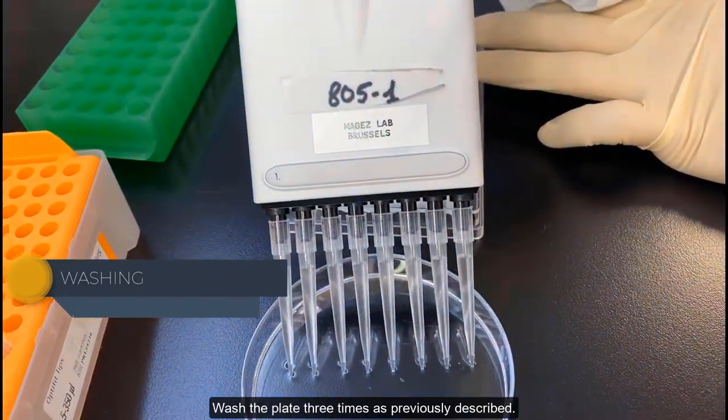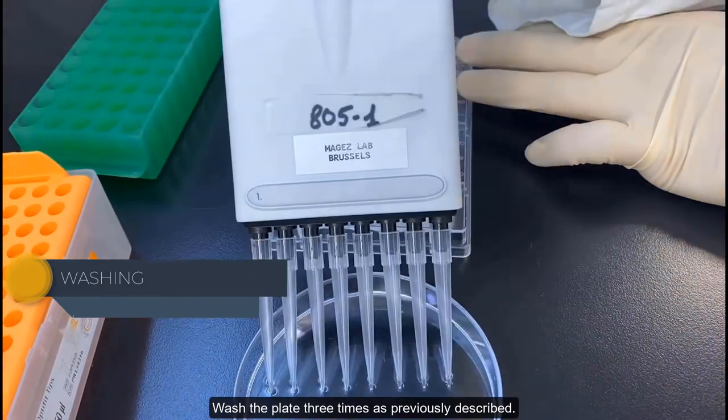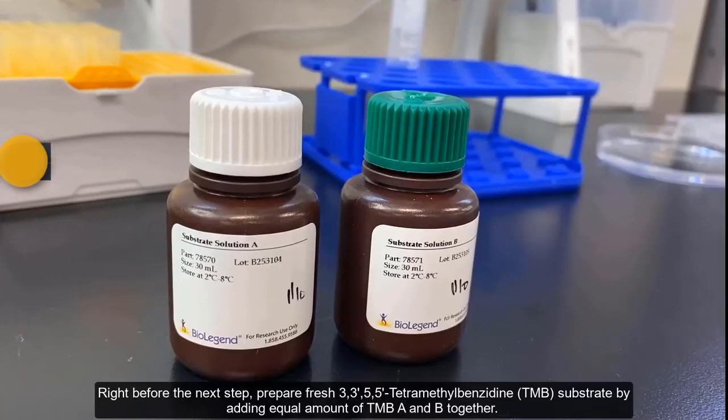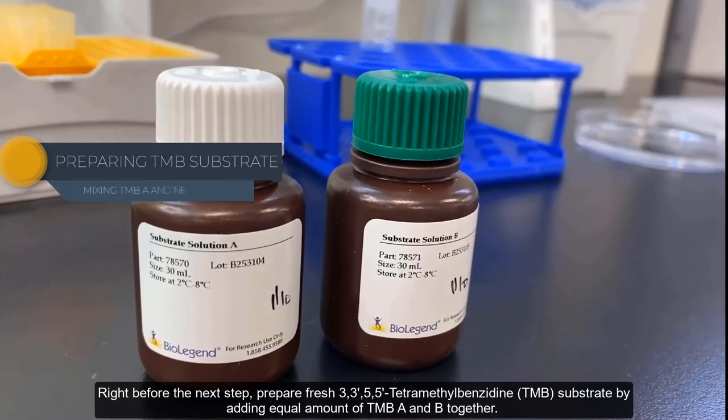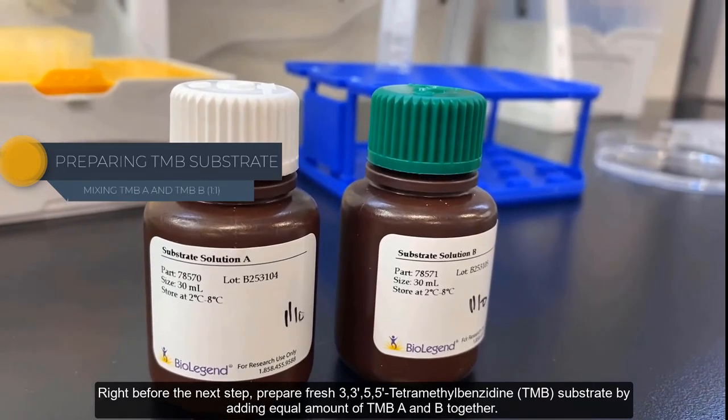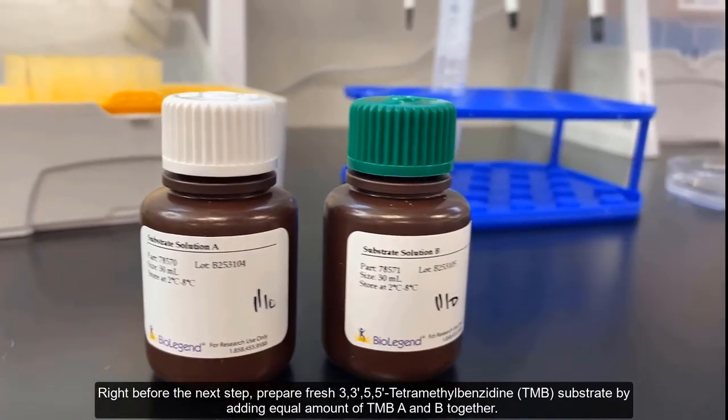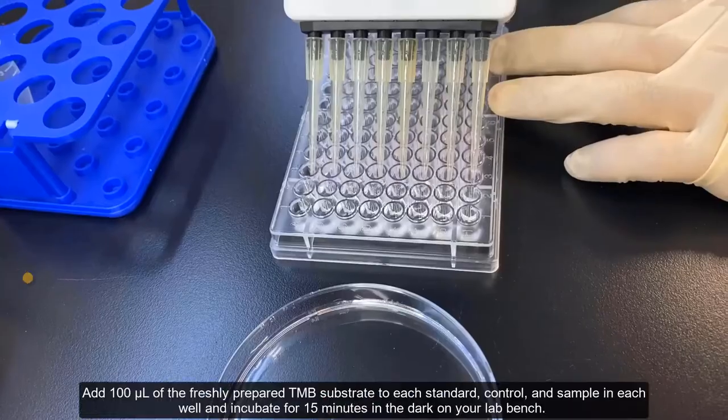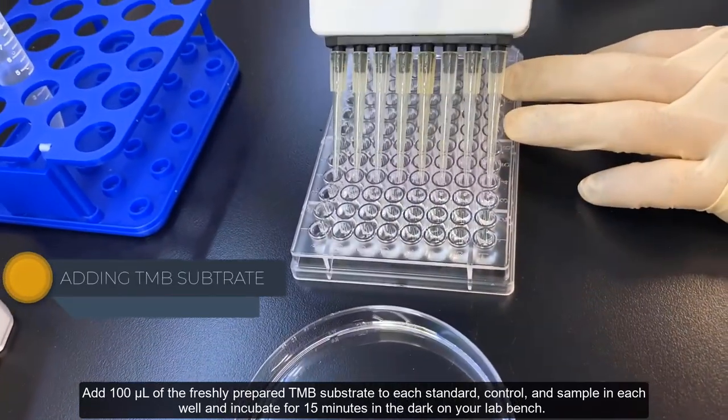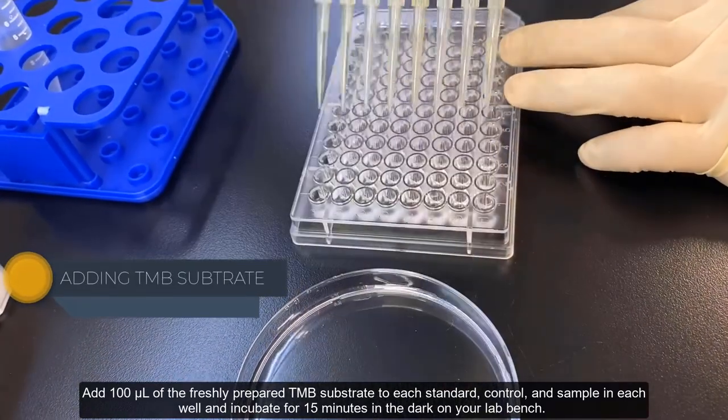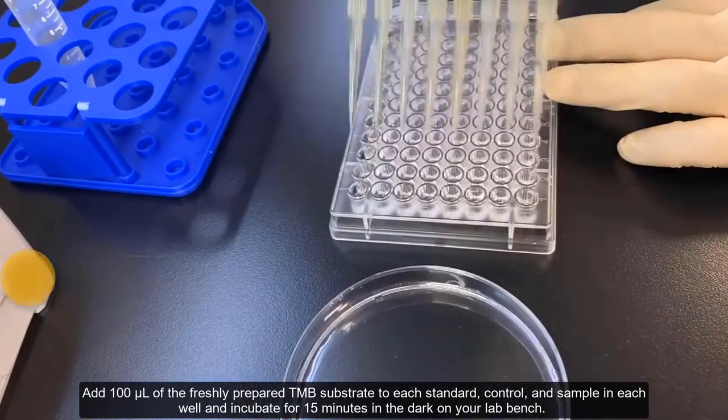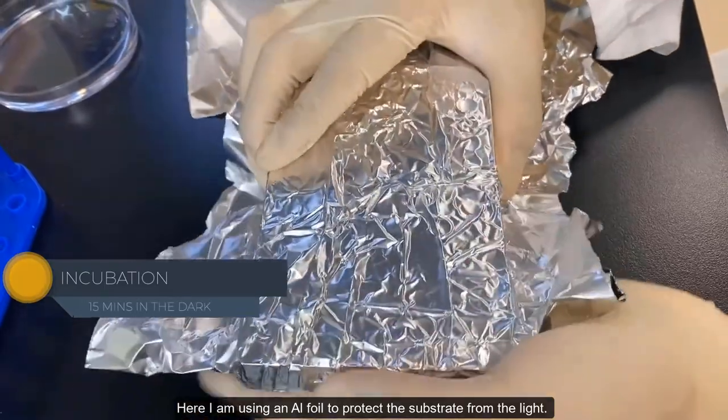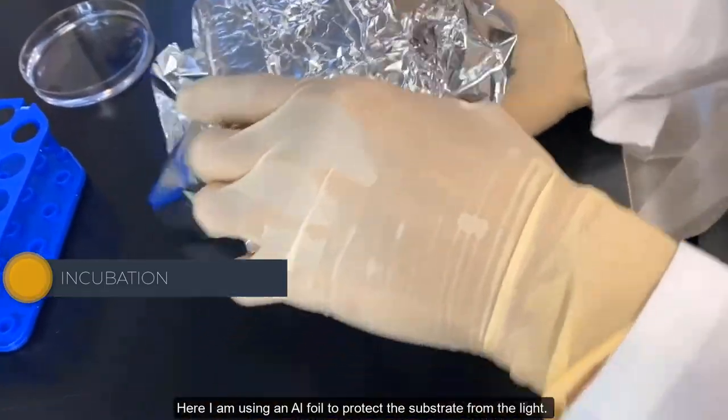Here we are going to wash the plate three times, as previously described. Right before the next step, prepare fresh TMB substrate by adding equal amount of TMB A and B together. Since they are light sensitive, be sure to protect it from the light. Add 100 microliters of the freshly prepared TMB substrate to each standard, control and sample in each well. Then incubate for 15 minutes in the dark on your lab bench. Here I am using an aluminum foil to protect the substrate from the light.